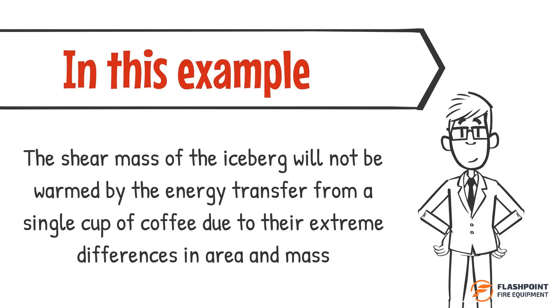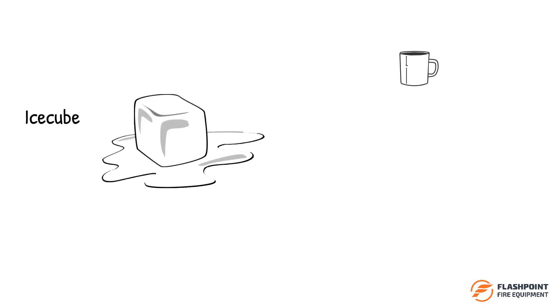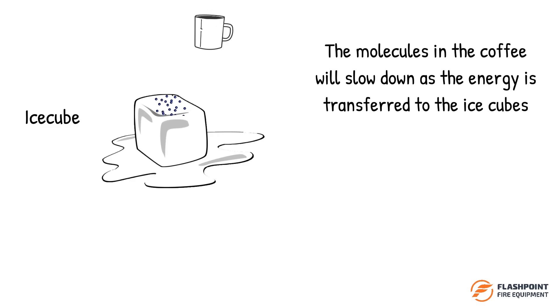But if I was to pour the coffee over ice cubes, the same transfer of energy would occur with the faster molecules of the coffee transferring their energy to the slower moving molecules in the ice cubes. As the molecules in the ice cubes speed up with their newfound energy, the molecules in the coffee will slow down as the energy is transferred to the ice cubes.